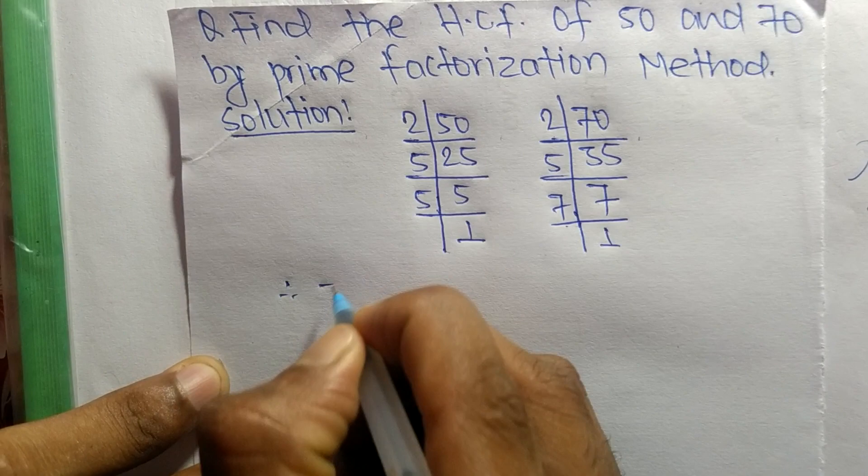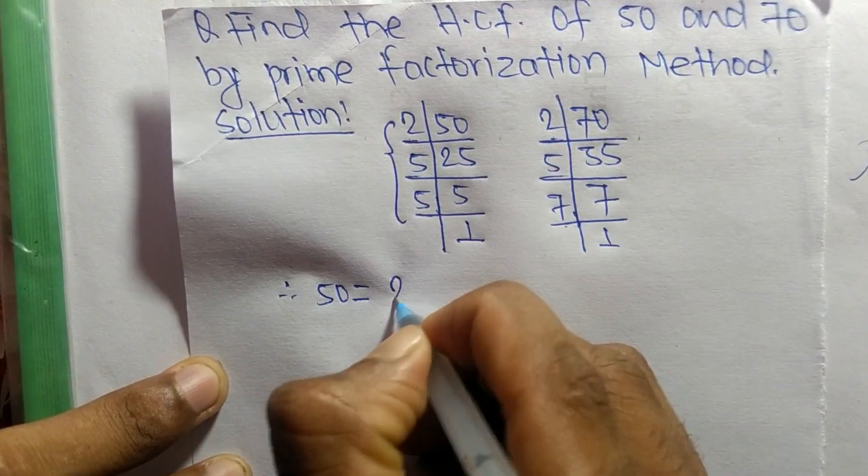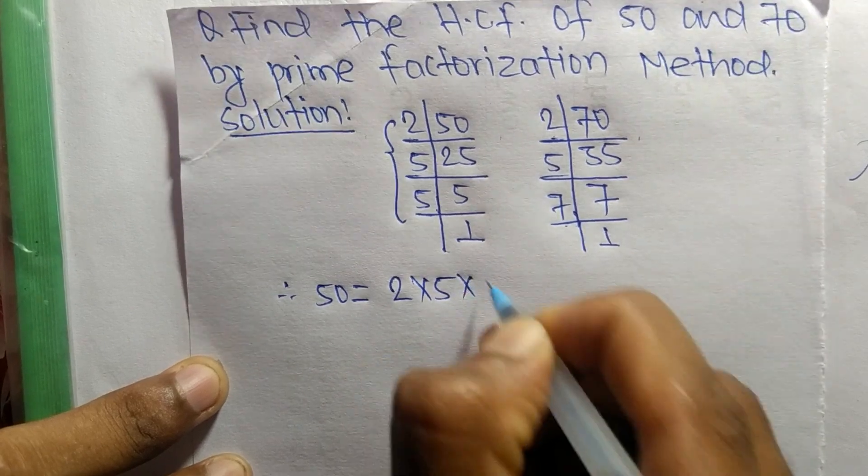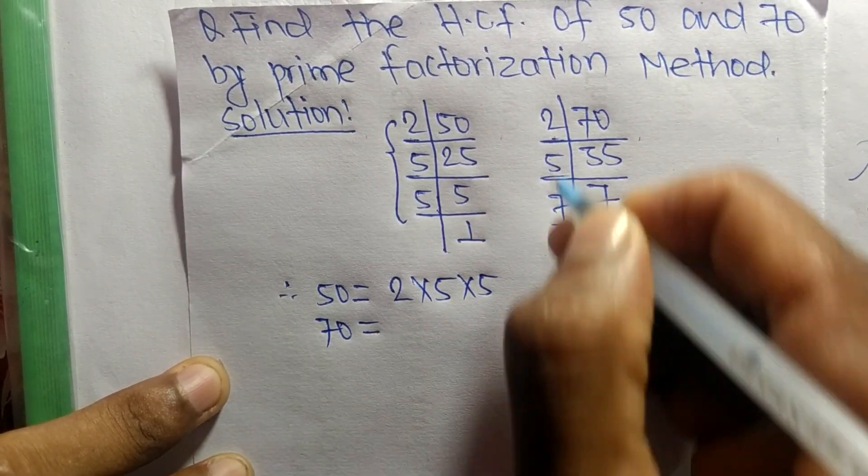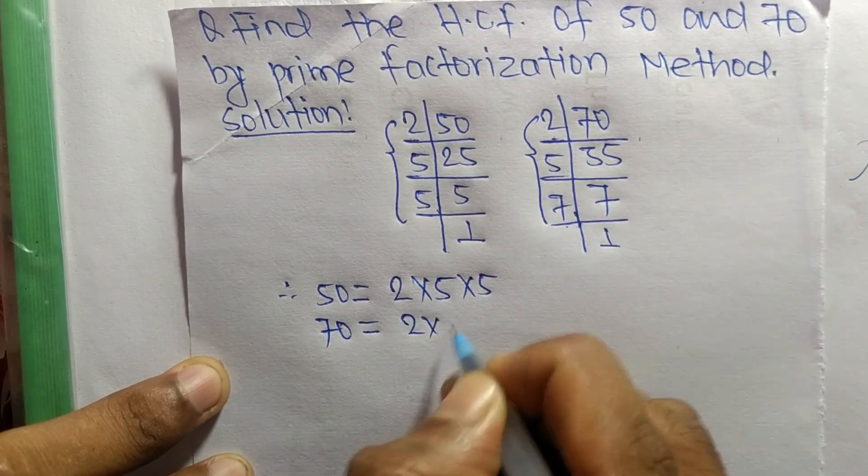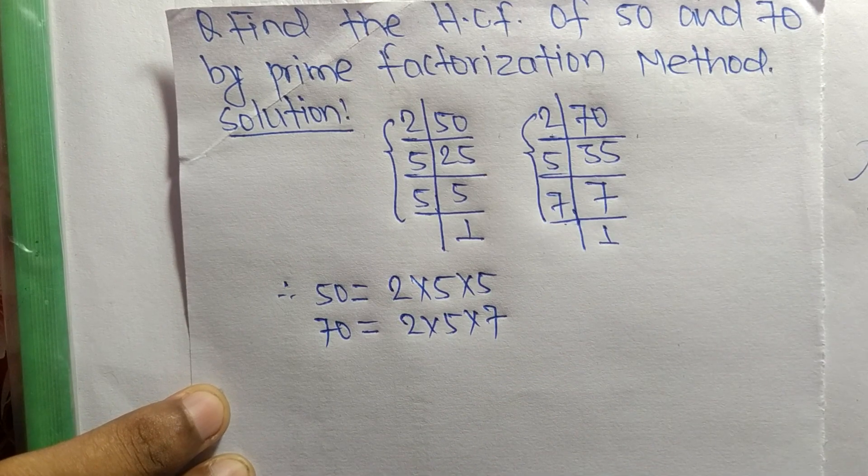we can write 50 is equal to 2 times 5 times 5 from this part. Likewise, 70 is equal to 2 times 5 times 7 from this part.